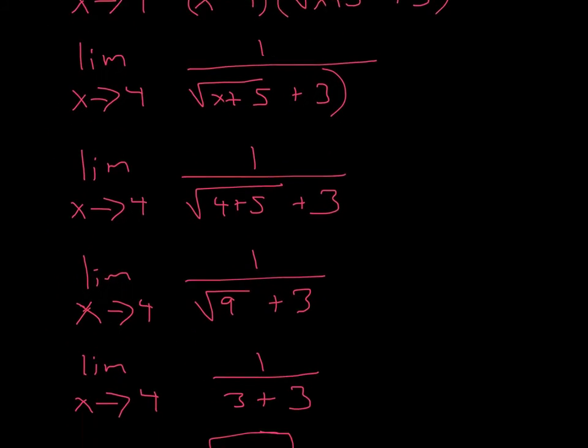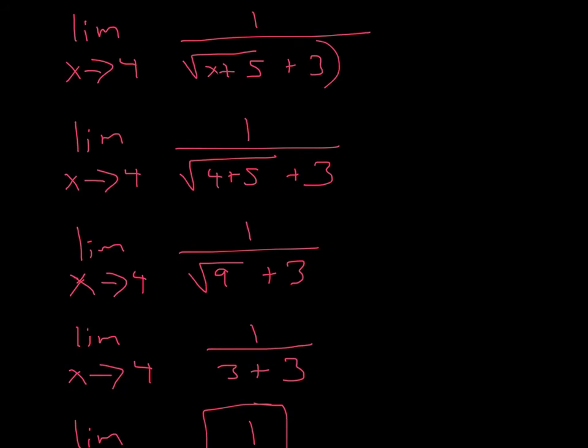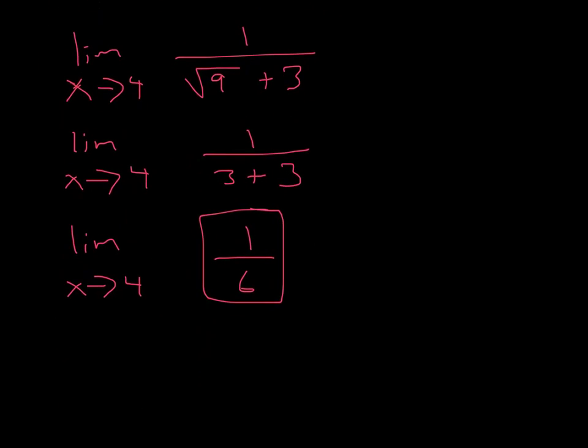So next, what you do is you just plug in. Now since everything is done, we use substitution again and see if that works. So we plug in 4 into x. And so we plug in 4, and then that becomes 4 plus 5 is 9, square root of 9. And then we do square root of 9 is 3, so it's 1 over 3 plus 3, so it's 1 over 6. So the final answer is 1 over 6.